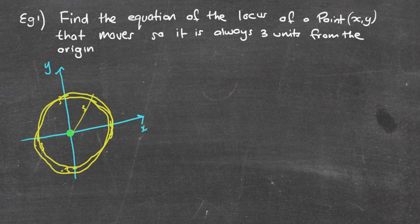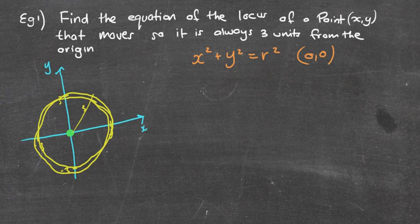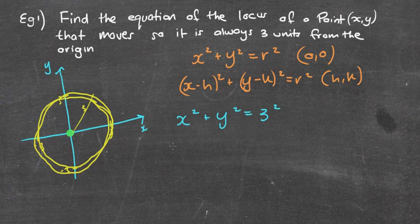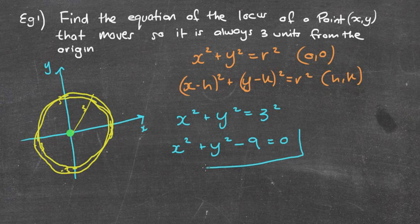The locus is that circle — the equation of that path moving all the way around the origin at three units. We have two circle equations: x² + y² = r² when the center is (0, 0), and (x - h)² + (y - k)² = r² when the center is (h, k). Since the center is the origin, it's simply x² + y² = 3², so x² + y² = 9, or in general form: x² + y² - 9 = 0.